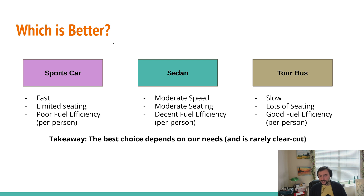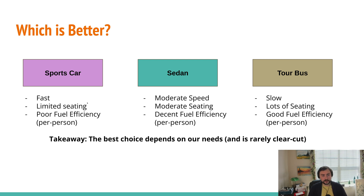Each of these categories has their own characteristics. For example, our sports cars are fast, but they have limited seating — maybe they only sit one or two people — and they typically have pretty poor fuel efficiency per person.